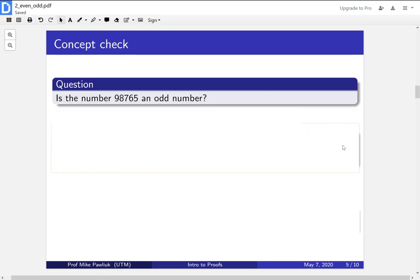Let's do a concept check. Is the number 98,765 an odd number and why? One common answer students give is yes, and the reason it's true is because it's 2 times 49,322 plus 1. 49,322 is an integer, so it's 2 times that plus 1. That's our definition of what it means to be an odd number.